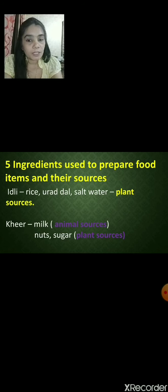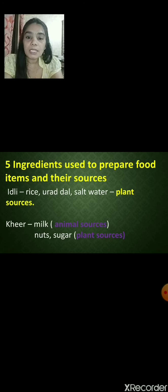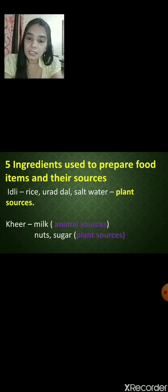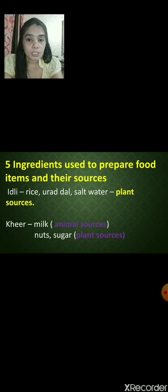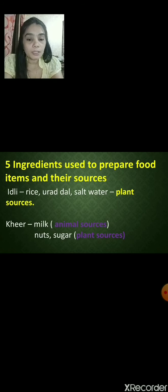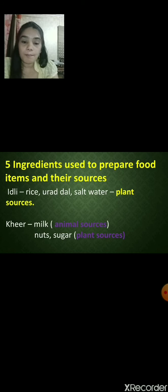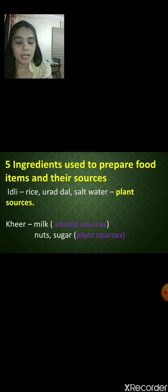For any food item to be cooked, we need ingredients. Rice, urad dal, salt — they are called ingredients. The things which are required for cooking the food are called ingredients. We get these ingredients from plants and animals.